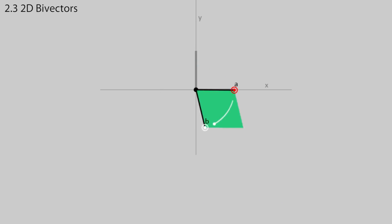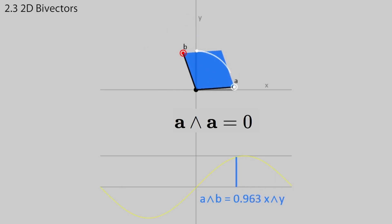You can see that by changing the angle between the vectors, the area of the parallelogram changes according to the sign of the angle. If the vectors are the same or if they are parallel, they don't form a proper plane and the result is 0. This simple property defines what a bivector is.